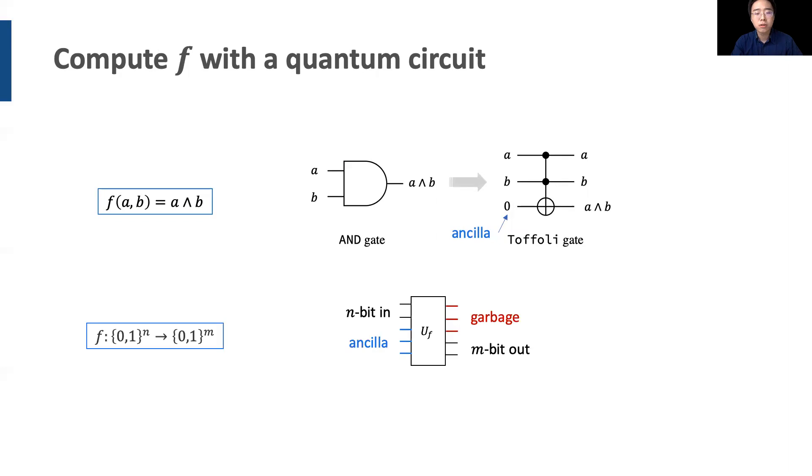In general, for a function with n bit input and m bit output, we design a circuit U sub F that takes the input qubits plus some ancilla and produce output qubits plus some garbage. Garbage can store the old input or any arbitrary scratch information. Next, we're going to discuss how to implement a quantum program consisting of these functions on a quantum computer efficiently.